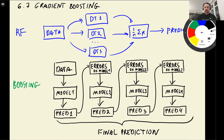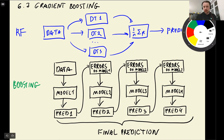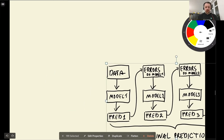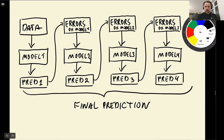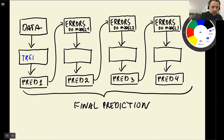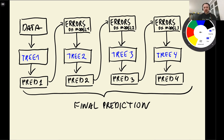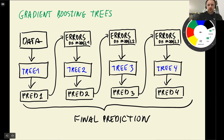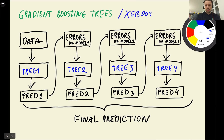We sequentially train multiple models, and each next model corrects the mistakes of the previous one. Model 3 corrects errors of model 2, model 4 corrects mistakes of model 3, and so on. The process is sequential: we first train model 1, then model 2, then model 3 — unlike random forest, where we can train all models in parallel. If we replace these models with trees, we get gradient boosted trees. There is one library with a great implementation called XGBoost, which we will use for this lesson.